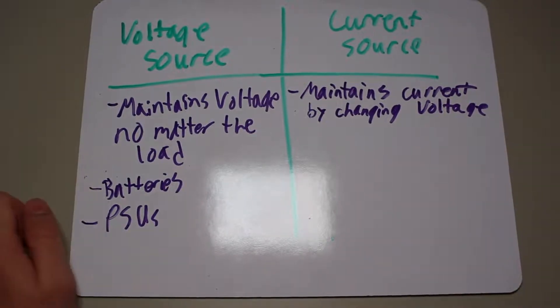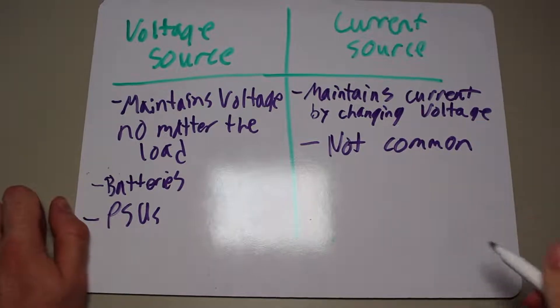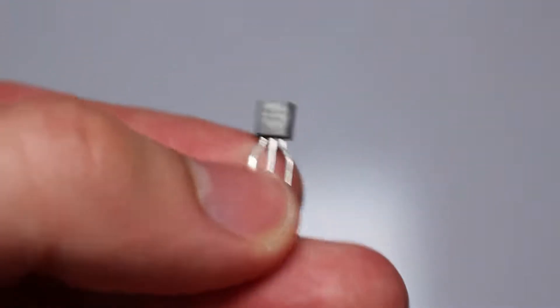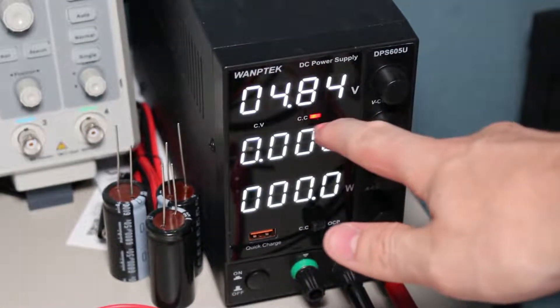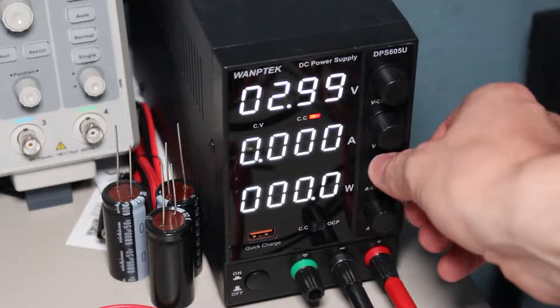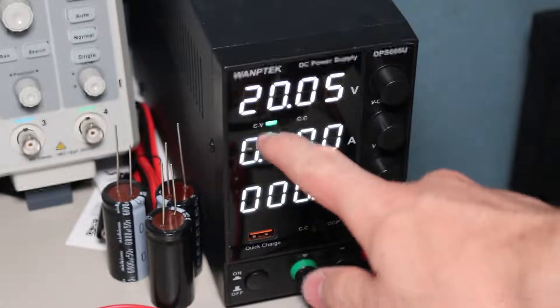Now, current sources aren't as common, but you can find them in ICs, such as the LM334, or in this case, a properly setup LM317. The constant current mode on a power supply is also a current source. It just limits its voltage to reach the desired current.